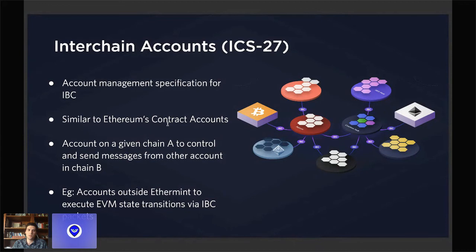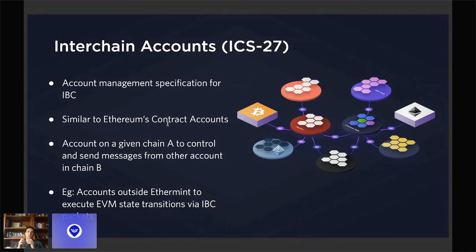The final solution is interchain accounts, which is basically an account management specification for IBC. This works very similar to Ethereum contract accounts in that if you have an account on chain A, you will be able to control and send messages from another account that you own on another chain. This will allow wallets and clients to send transactions without having to connect to multiple chains. I think this is going to be big, especially if multiple chains implement the EVM module for smart contract support, as you'll be able to call different smart contracts from just one interface.